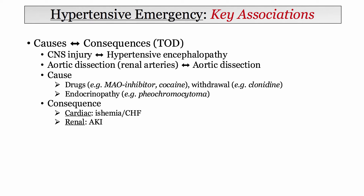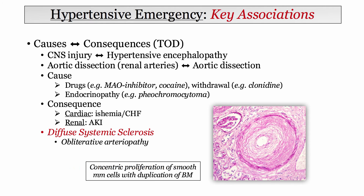Both the heart and kidneys can be impacted by a hypertensive emergency. You need to be aware of the association between malignant hypertension and diffuse systemic sclerosis. Systemic sclerosis can present with an obliterative arteriopathy, and similar pathologic findings including smooth muscle proliferation will be described.